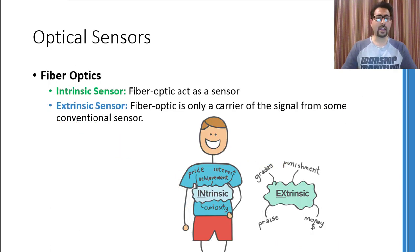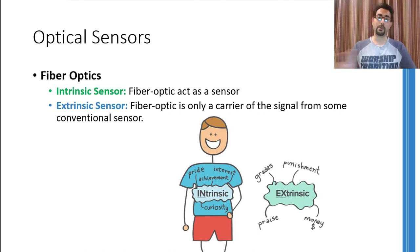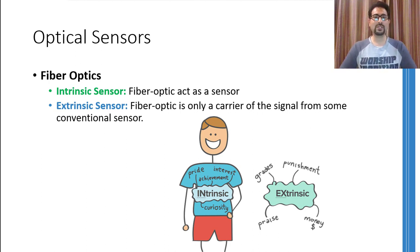A couple of slides back, I said that the light generated by the optical transmitter may travel through the air or sometimes through the fibre-optic cable as well. But the fibre-optic cable can serve two purposes. In one form, it can act as a sensor itself, whereas in the other form, it can only be used to carry the signal from one location to the other. The fibre-optic is referred to as an intrinsic sensor when it is acting as a sensor itself, whereas if it is only being used to route the light signal from one location to the other, then it is referred to as being used as an extrinsic sensor.